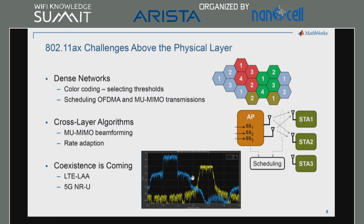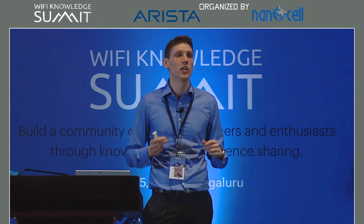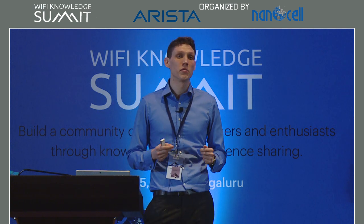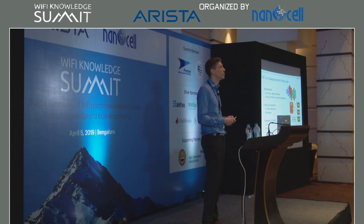Now let's move above the physical layer to the MAC and talk about some of the challenges there. Dense networks are a really important use case for 802.11ax, and they've added features at the MAC. One interesting feature is color coding, which allows frequency reuse within neighboring networks by letting a device know whether it's receiving a transmission from its own network or a neighboring one, enabling better interference management. These algorithms require thresholds to be set, so a lot of simulation is required to determine the right thresholds for different scenarios.